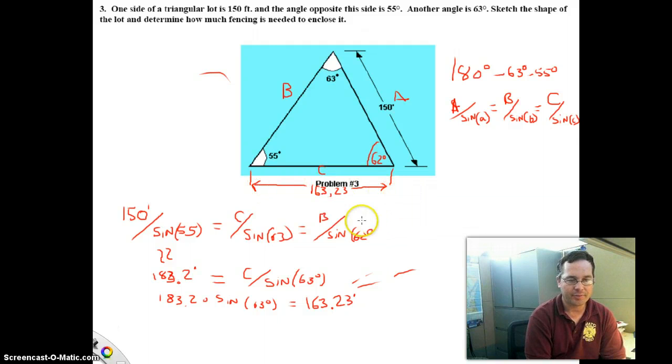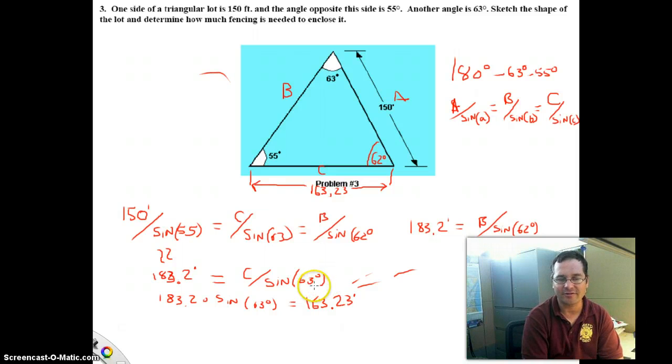The process, again, for finding the length of side B is we set the value that we found in the first part of the problem using law of sines, 183.2 feet, equal to B over sine of, in this case, 62 degrees, and we'll get B by itself by multiplying both sides by the sine of 62. If you think about the previous step of the problem, we multiplied both sides by the sine of 63. These two numbers are going to be very close together. So we'd expect a number, a length for side B that's going to be close to the length we got from side C, which was 163. So if we rewrite the problem, 183.2 feet times sine of 62 degrees equals the length of side B.